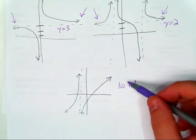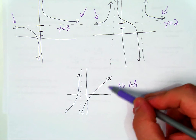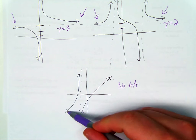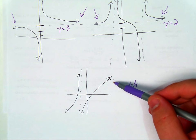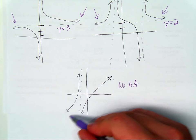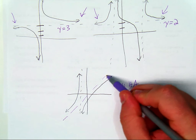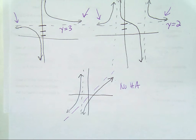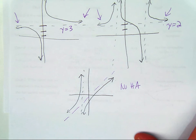This graph has no horizontal asymptote because as x approaches infinity and negative infinity the graph does not approach a horizontal line. In fact, this graph has something called a slant asymptote, which is another kind of end behavior you can get in rational functions. In a future video we will talk about how you find slant asymptotes.